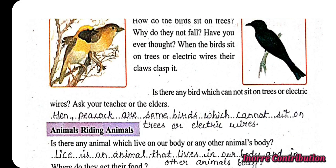Is there any bird which cannot sit on trees or electric wires? Hen and peacock are some birds which cannot sit on trees or electric wires, mainly because they cannot fly high. They can fly only a very little distance and to a little height.